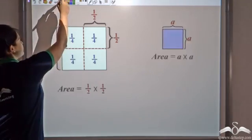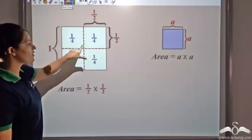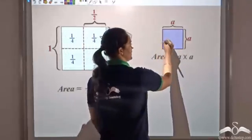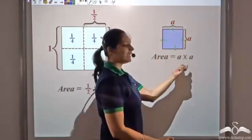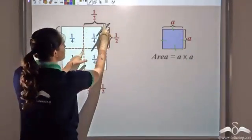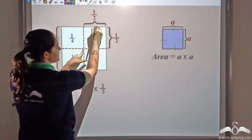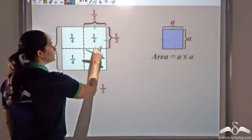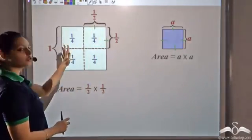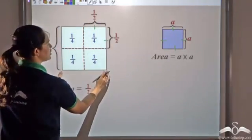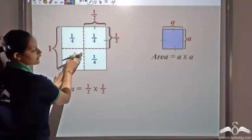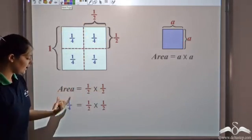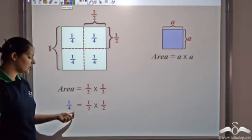The area of a square piece is a times a. If you have a square with all sides the same, the area would be a times a. In this piece I have a square with sides of half and half, so the area would be half times half. But I also know this is nothing but 1 fourth of the total portion, because I divided this sheet into 4 equal parts and this is 1 of those 4 equal parts. So half times half is actually giving me 1 by 4.